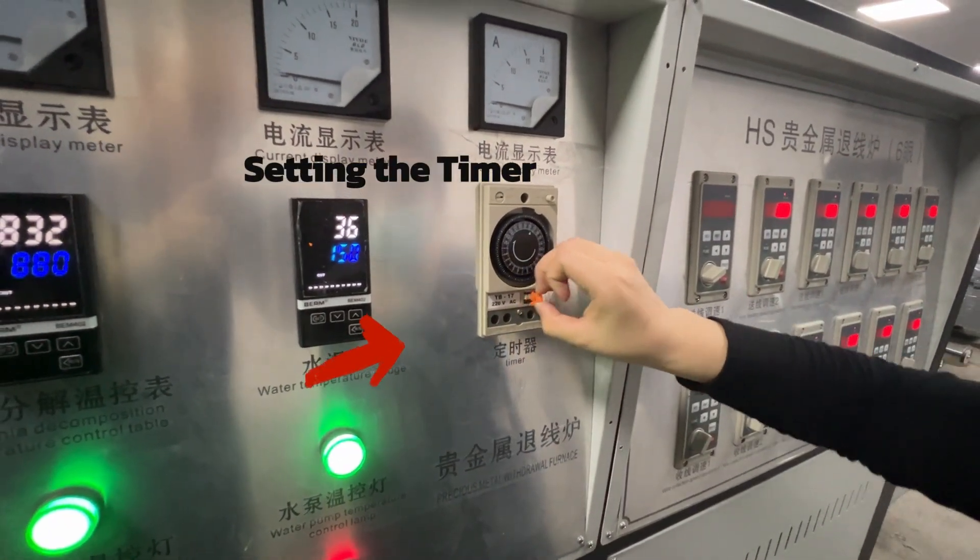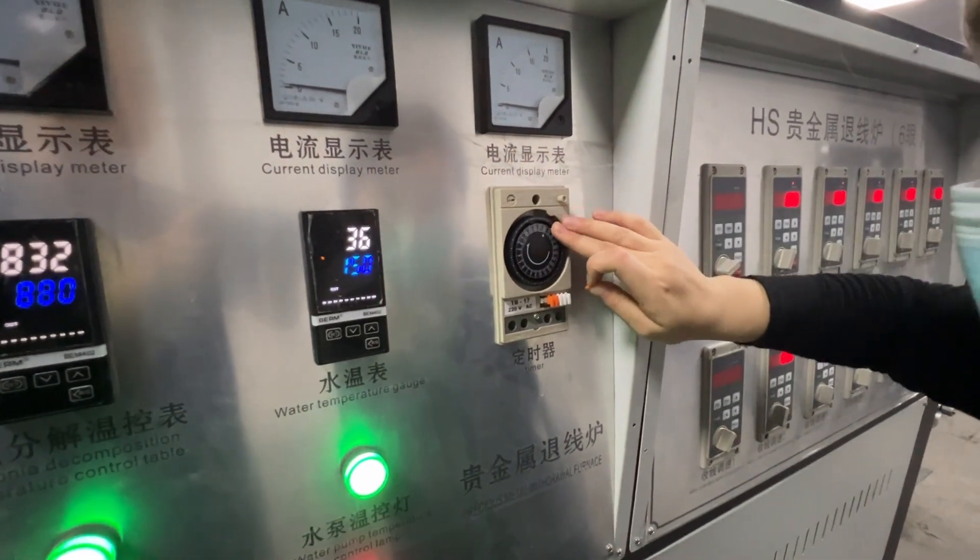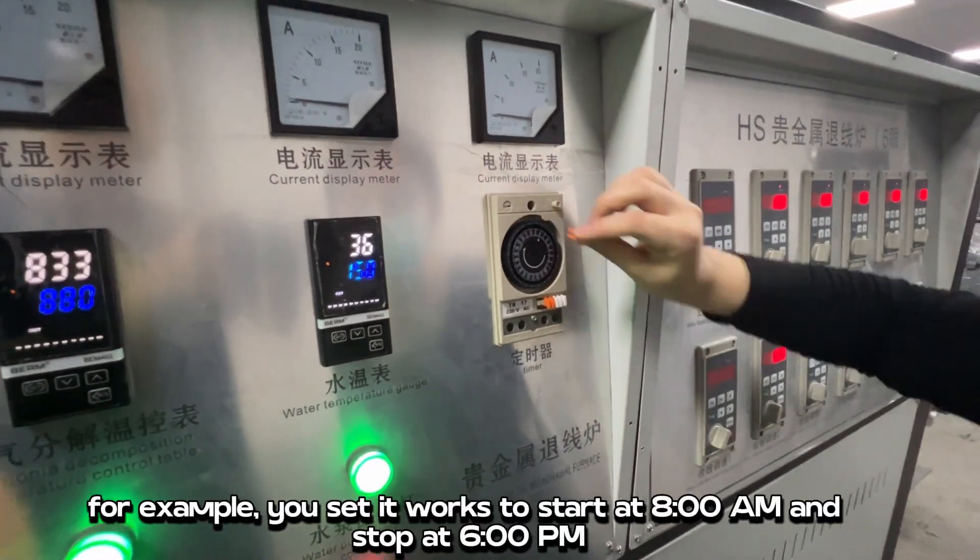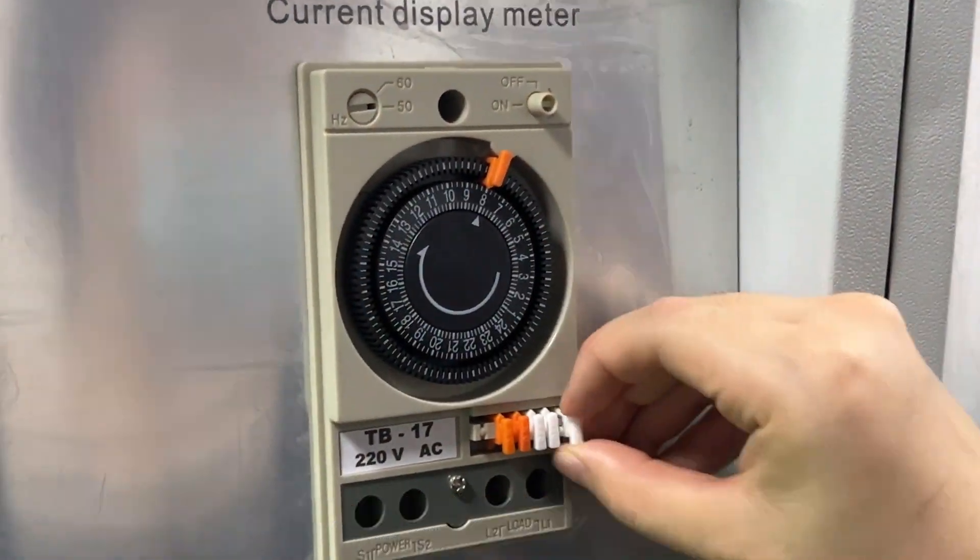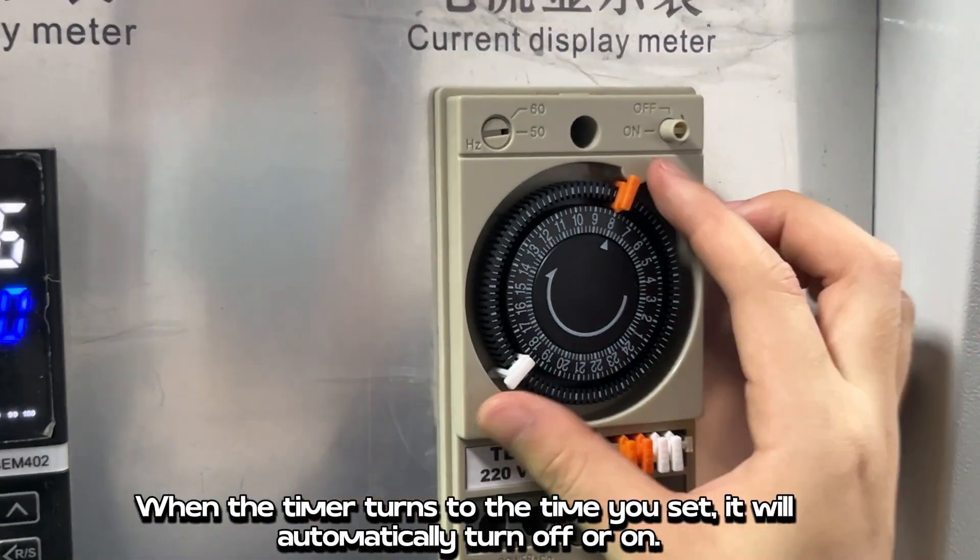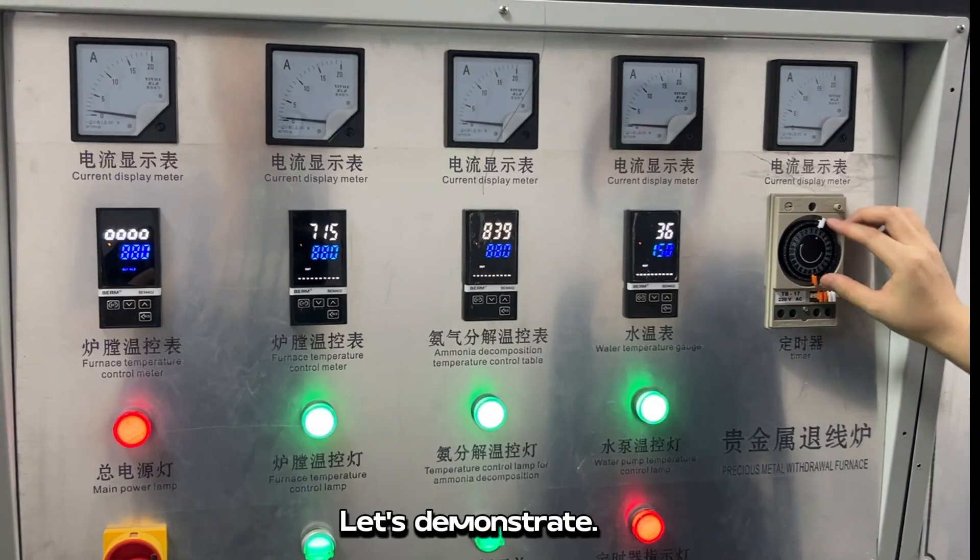Setting the timer. White is off, orange is on. For example, you set it to start at 8 o'clock a.m. and stop at 6 o'clock p.m. When the timer turns to the time you set, it will automatically turn off or on. Let's demonstrate.